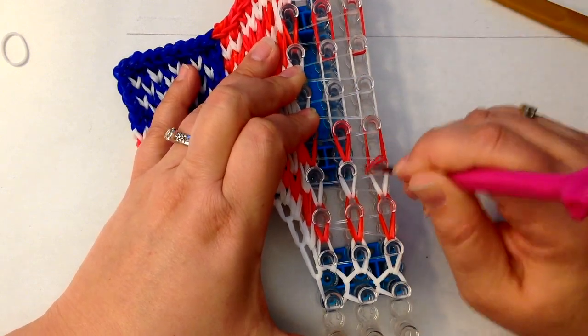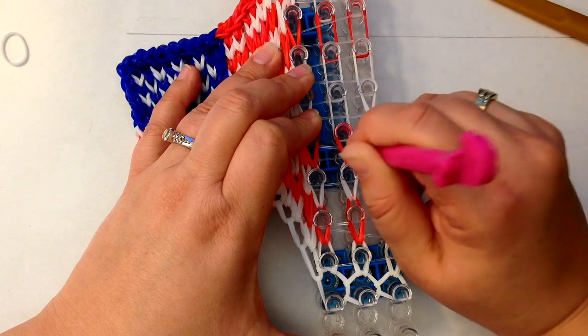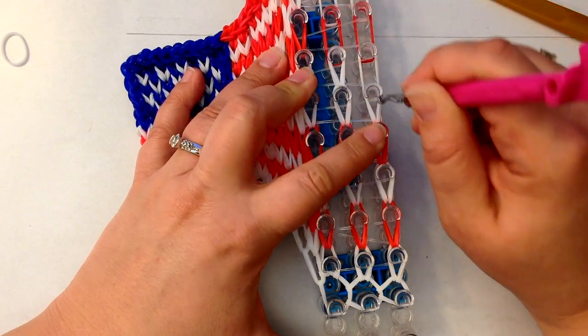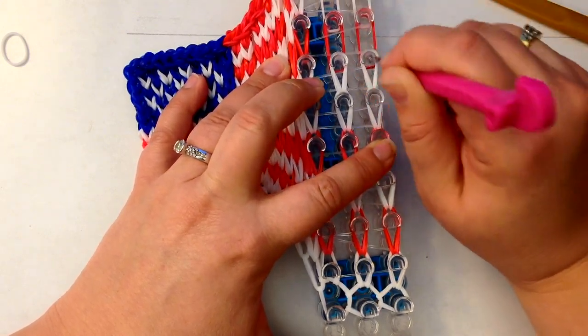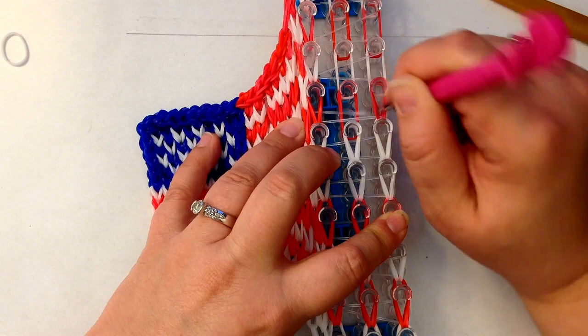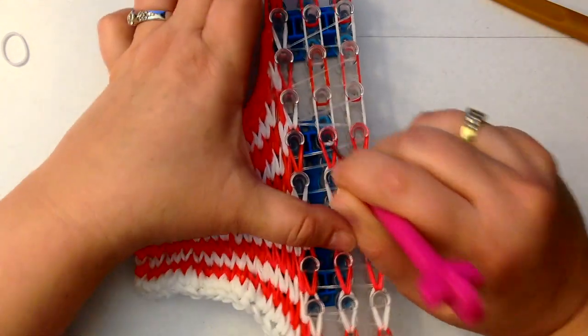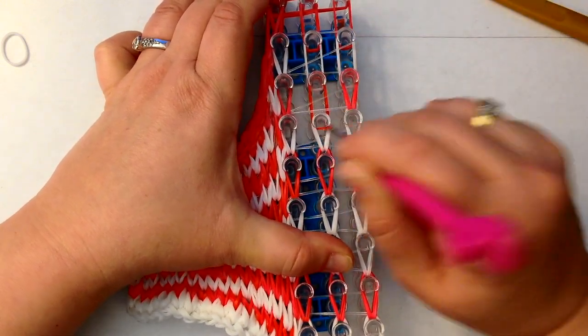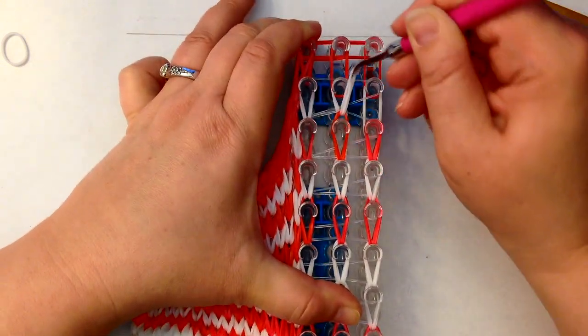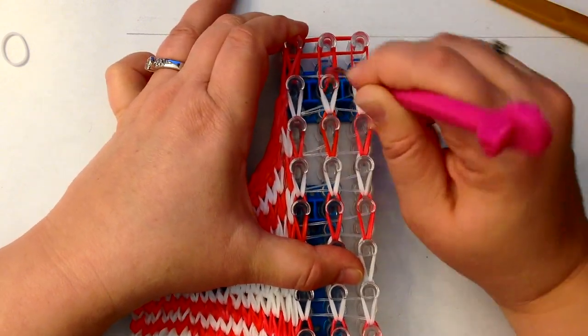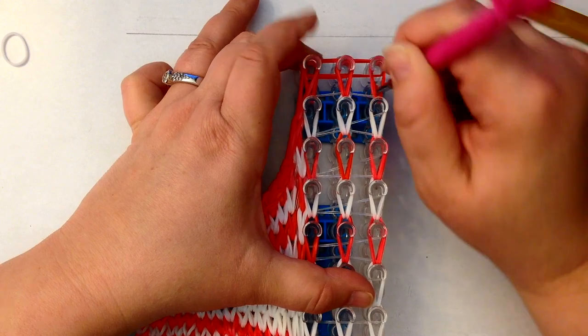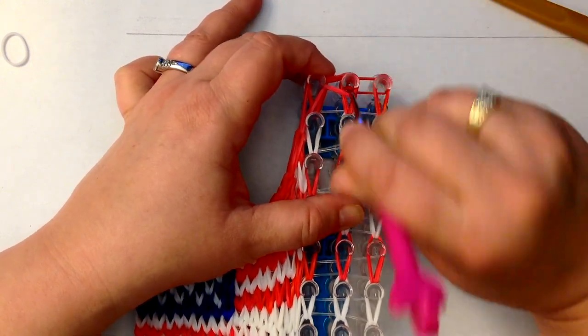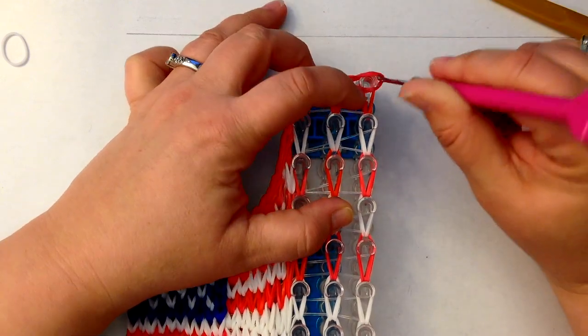Now you're only going to need two more white bands to tie off with. Drag this over and loop it to the right. We can loop up these two columns at the same time, that's absolutely fine.